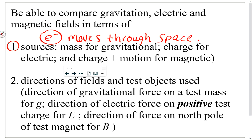How do you determine the direction of a field? You put in a test object specific to the type of field. For a gravitational field, you put in a mass. For an electric field, you put in a positive test charge. For a magnetic field, you put in a test compass and look at the north pole of the compass.